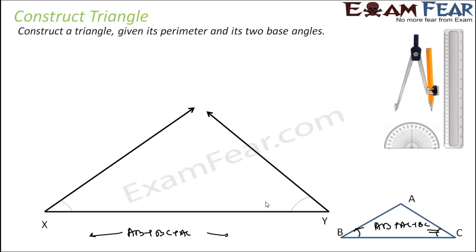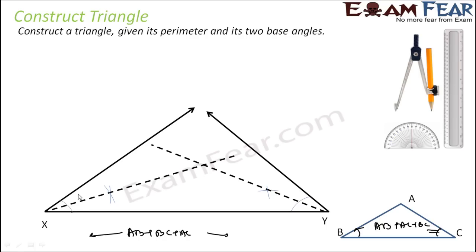Once we draw these angles, we draw the bisector of each angle. To do this, we take each point as center, draw arcs, and join the intersection points to get the angle bisectors of angle B and angle C.